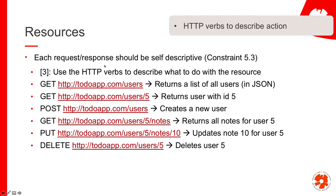Each request and response should be self-descriptive — that's constraint 5.3. The checklist recommends using HTTP verbs to describe what we want to do. For example, if we do GET /users, the server will return the list of all users as a JSON representation. If we do GET /users/5, we get a JSON representation of the user with ID 5. If we do POST to /users — same URL but a different verb — we tell the server to create a user instead of reading.